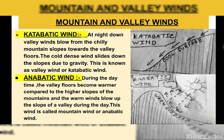The next is anabatic wind. Anabatic winds are upslope winds driven by warmer surface temperatures on a mountain slope than the surrounding air column. These are found in mountainous regions. During daytime the valley floors become warmer compared to the higher slopes of the mountains. The warm winds then blow up the slope of a valley during the day, and these winds are called mountain wind or anabatic wind.